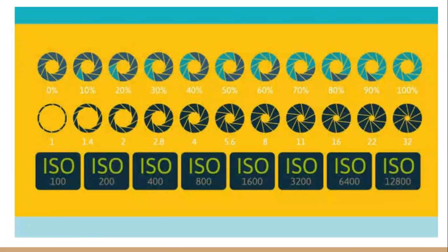As mentioned earlier, the higher the ISO the more grainy or exposed the image is, and the lowest value is 100. Each value goes up by double.